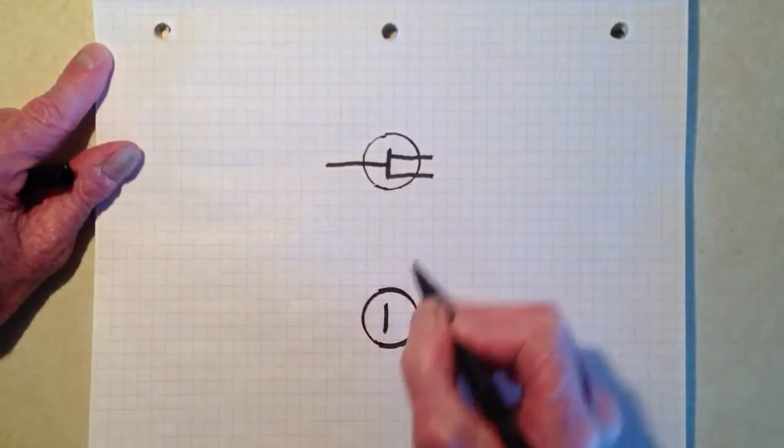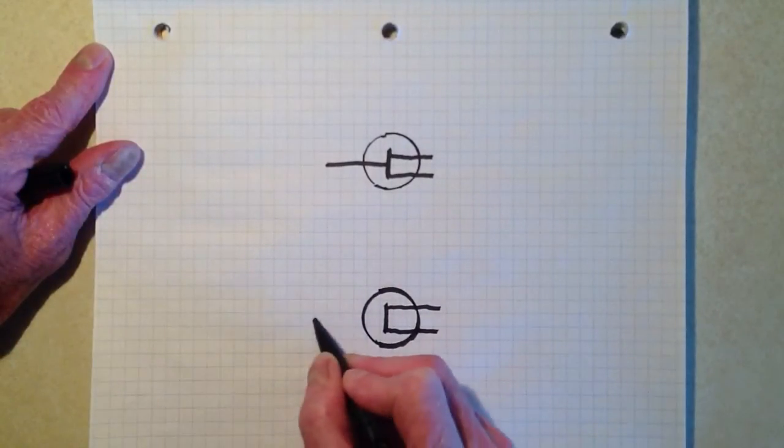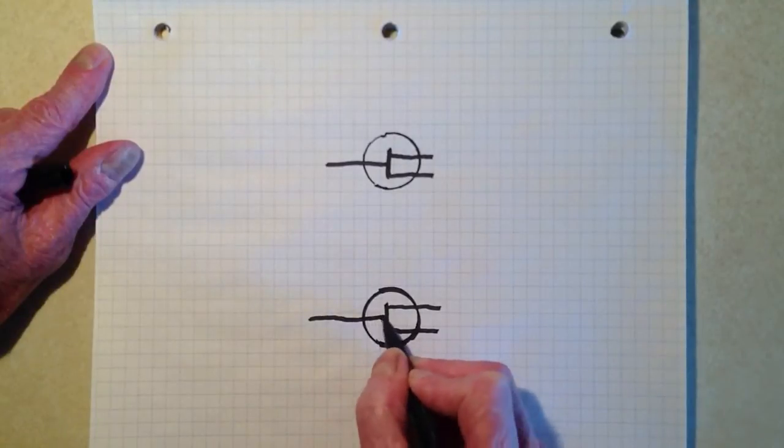Now, this is the basic symbol for a field effect transistor.